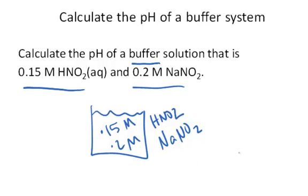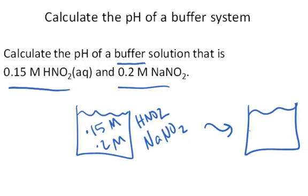Now, this particular salt, of course, dissociates 100%, so I can think about this solution as having the weak acid and the conjugate base partner of the weak acid in a substantial amount, 0.15 and 0.2.